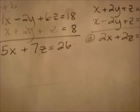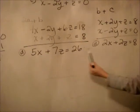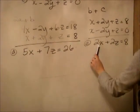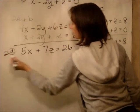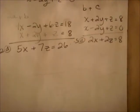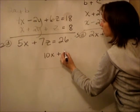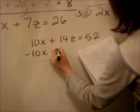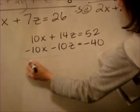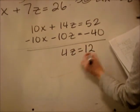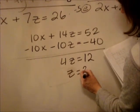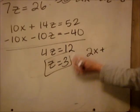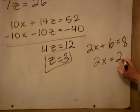Now we have two equations with two variables. We need to eliminate one variable. I'm going to eliminate the x's by making the coefficients both 10. So I take d times 2 and e times minus 5: we get 10x plus 14z equals 52, and minus 10x minus 10z equals minus 40. Adding those gives 4z equals 12, so z equals 3. Substituting back into equation e: 2x plus 6 equals 8, so 2x equals 2 and x equals 1.